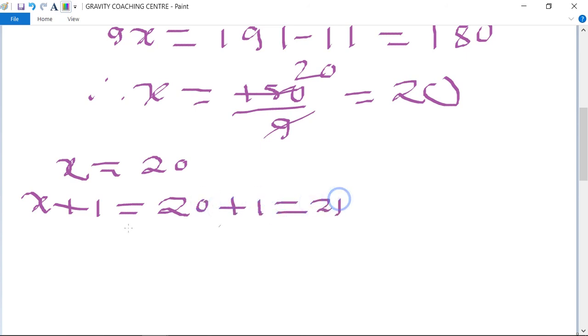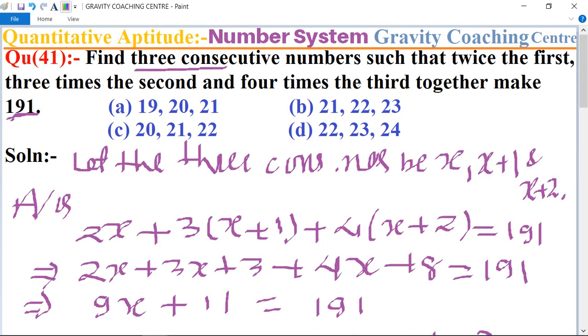And the third one is x plus 2, so 20 plus 2 equals 22. So all three numbers are 20, 21, and 22. Therefore, option C is the right answer.